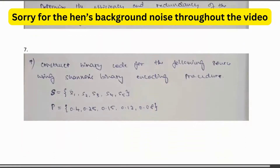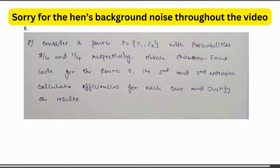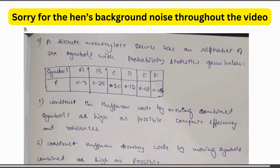Another important problem type: construct a binary code for a source using Shannon's binary encoding procedure — very important. Also, consider source S = {s1, s2} with probabilities 3/4 and 1/4 respectively; obtain the channel Fano code for source S and its second and third extensions, and calculate efficiencies for each case. A discrete memoryless source with an alphabet of six symbols and given probability statistics is also covered.